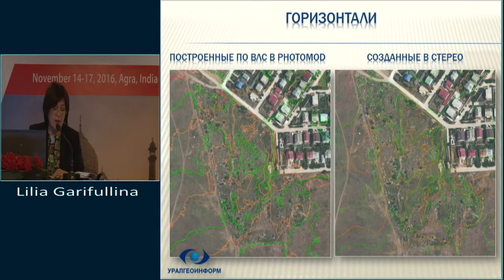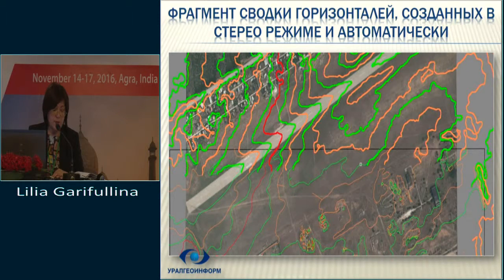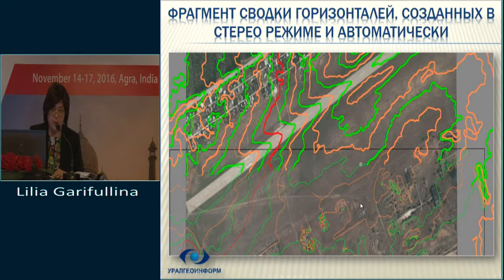Comparisons showed that there is a mathematically correct representation that repeats the forms of relief, but the level of detail is redundant. This can improve the scanning process and eliminate the effects of vegetation that has changed over time. The results of the automatically built drone relief are satisfactory. In the extract shown, the upper part is built based on ALS (airborne laser scanning) and the bottom part is done in stereo mode.